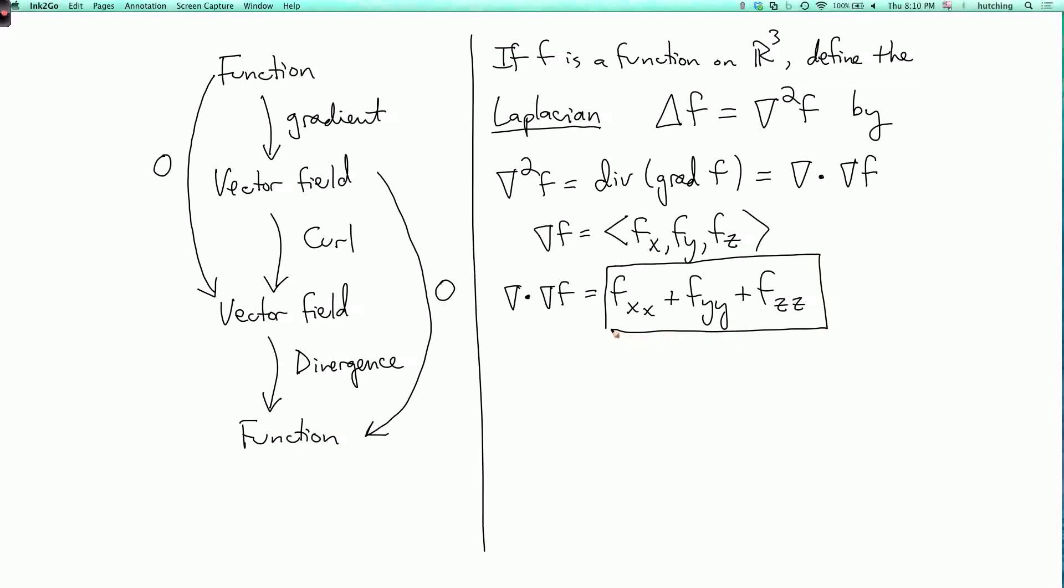This certainly does not have to be zero, although there are some interesting cases where it is. Like in physics, if you don't know anything about electricity and magnetism ignore this, but if f is the electric potential, then the Laplacian of f is zero where there are no charges. In electricity and magnetism, sometimes you're trying to figure out what this function is, so you're solving this equation. You want to find a function whose Laplacian is zero, given some boundary conditions.